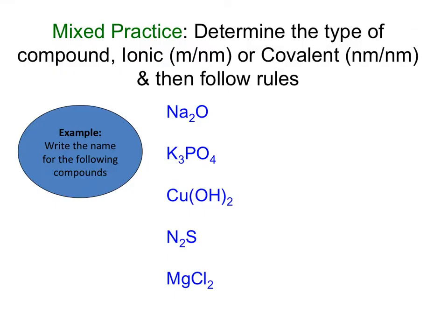So in this self-check, we have mixed practice. The first thing you're going to have to do is identify the compound as either ionic, containing a metal and a non-metal, or covalent molecular, which is two non-metals. And then you will follow the rules that we have learned over the last couple of sessions. Make sure to refer back to your flowchart if you have any questions.